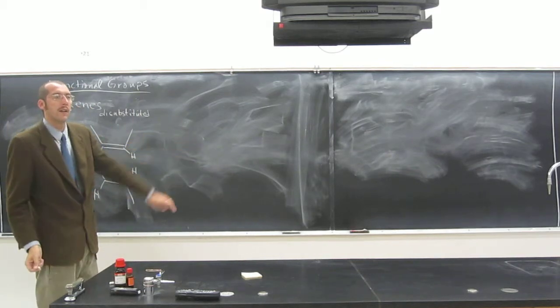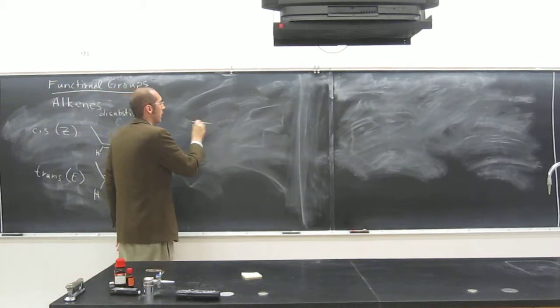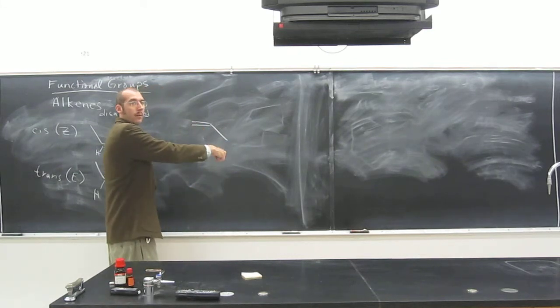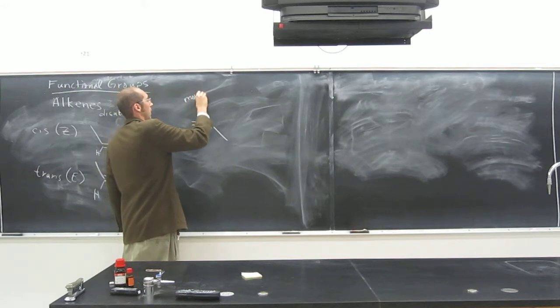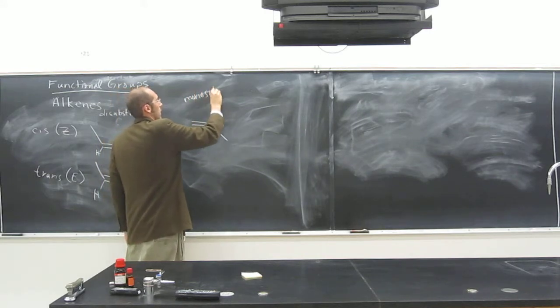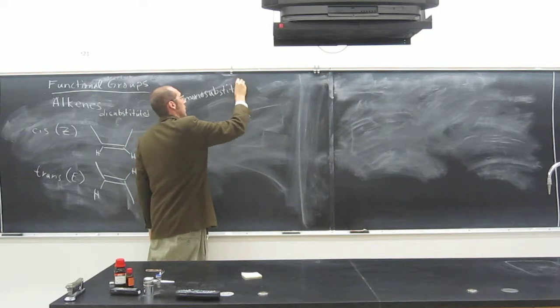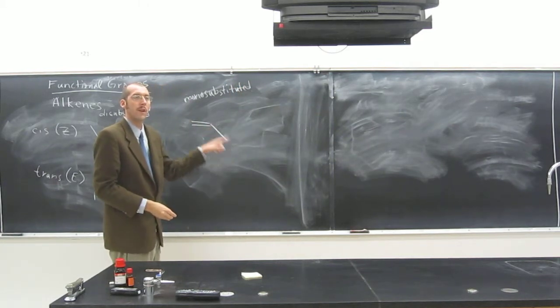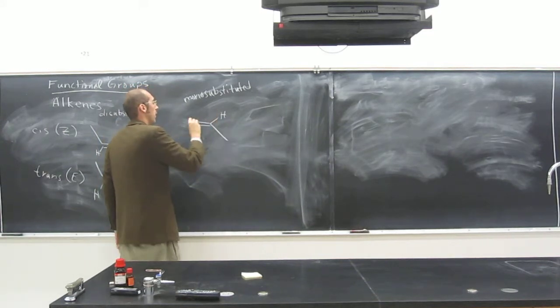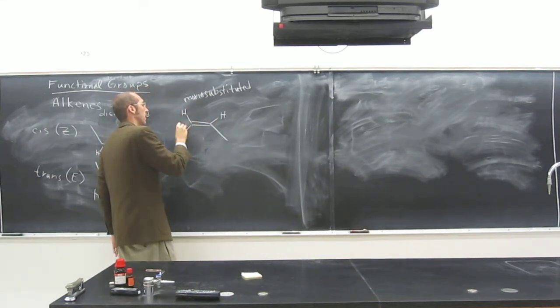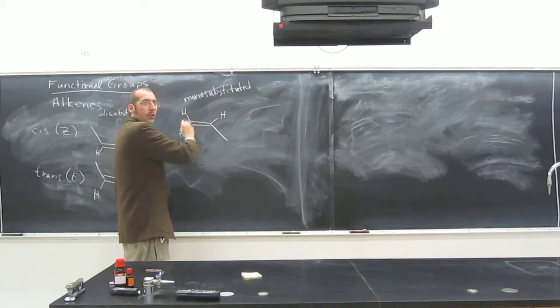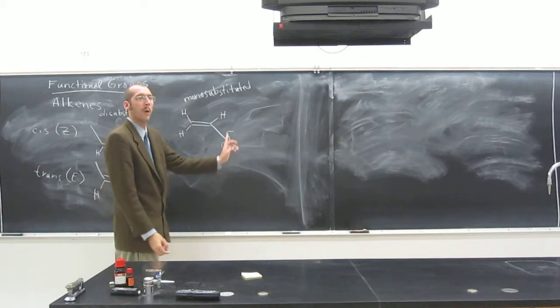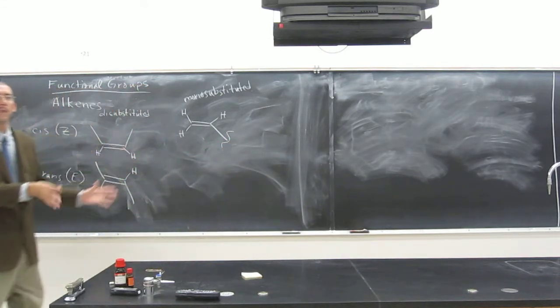So let's continue along with alkenes. So we can have this type of an alkene. This is called a monosubstituted alkene. Why? Because there's only one carbon bonded to it, right? So all of the other ones, all the other things bonded to the alkene, remember the functional group alkene, are hydrogens. So we only have the one R group. Remember R is just any group.